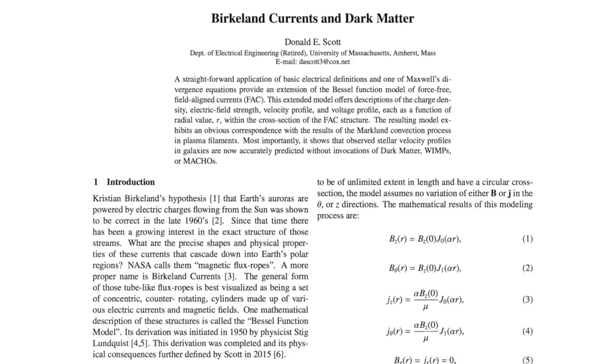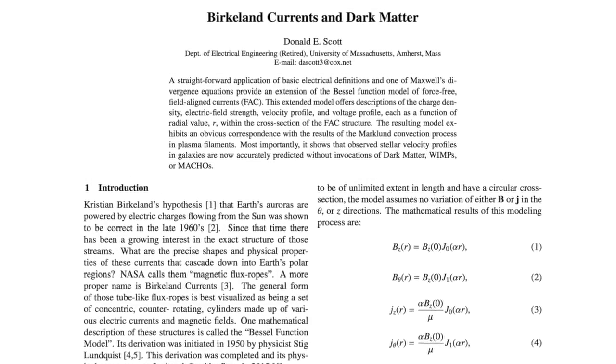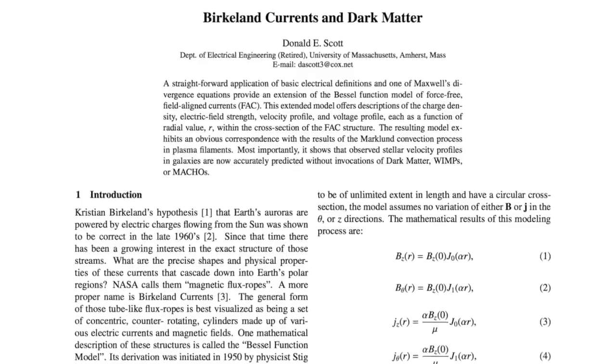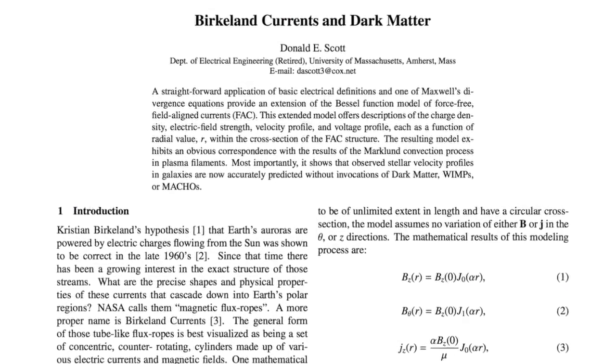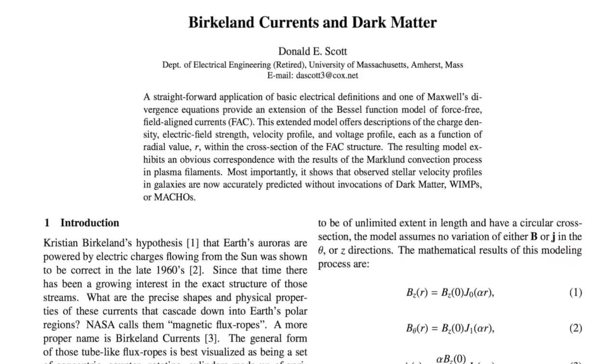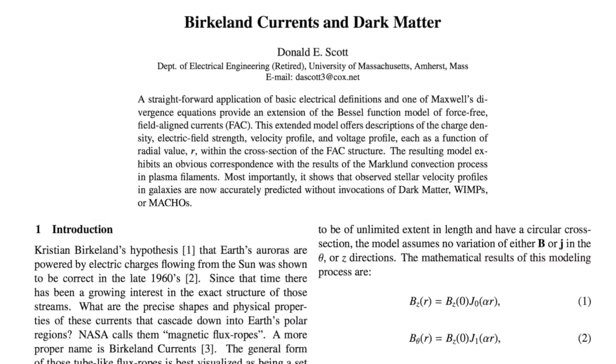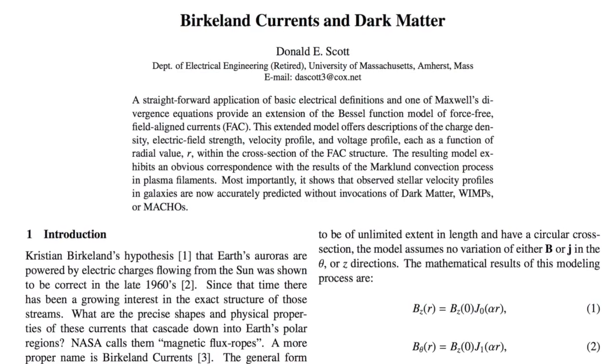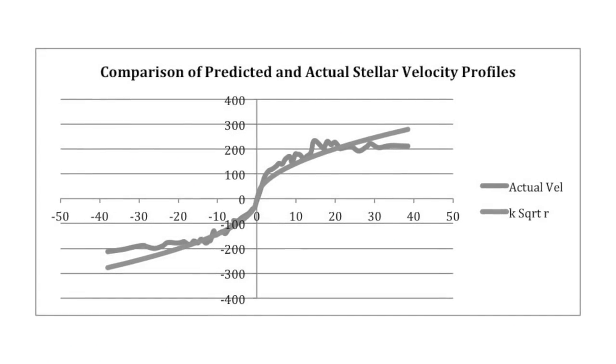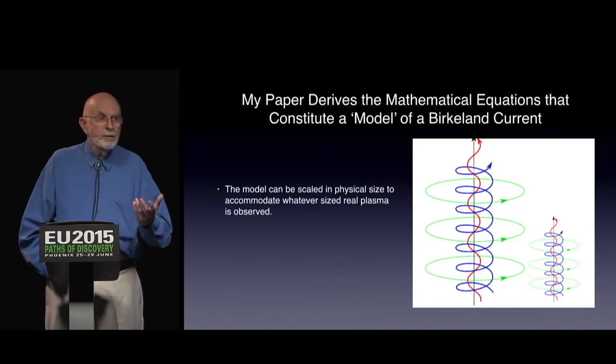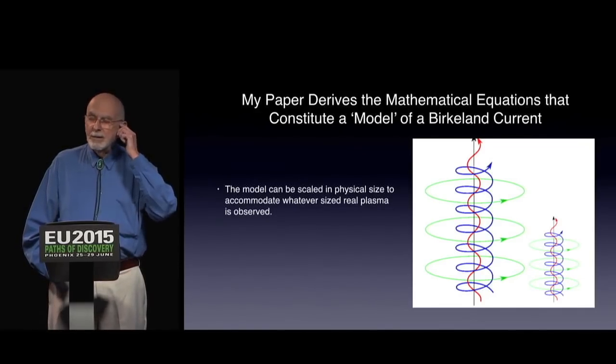In a new scientific paper entitled Birkeland Currents in Dark Matter, scheduled for publication in April of this year, Dr. Scott proposes that his model of the Birkeland current may finally help explain anomalous stellar velocity profiles, with no need for dark matter. In this episode, Dr. Scott summarizes his new paper, beginning with a review of his previous findings on the Birkeland current structure.